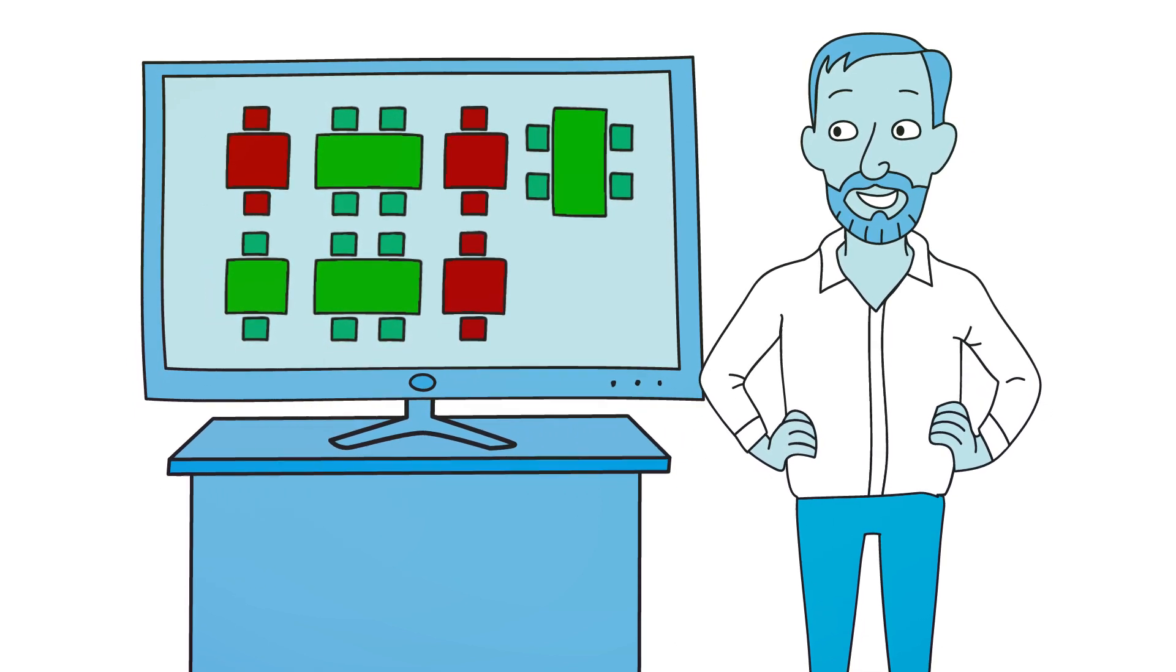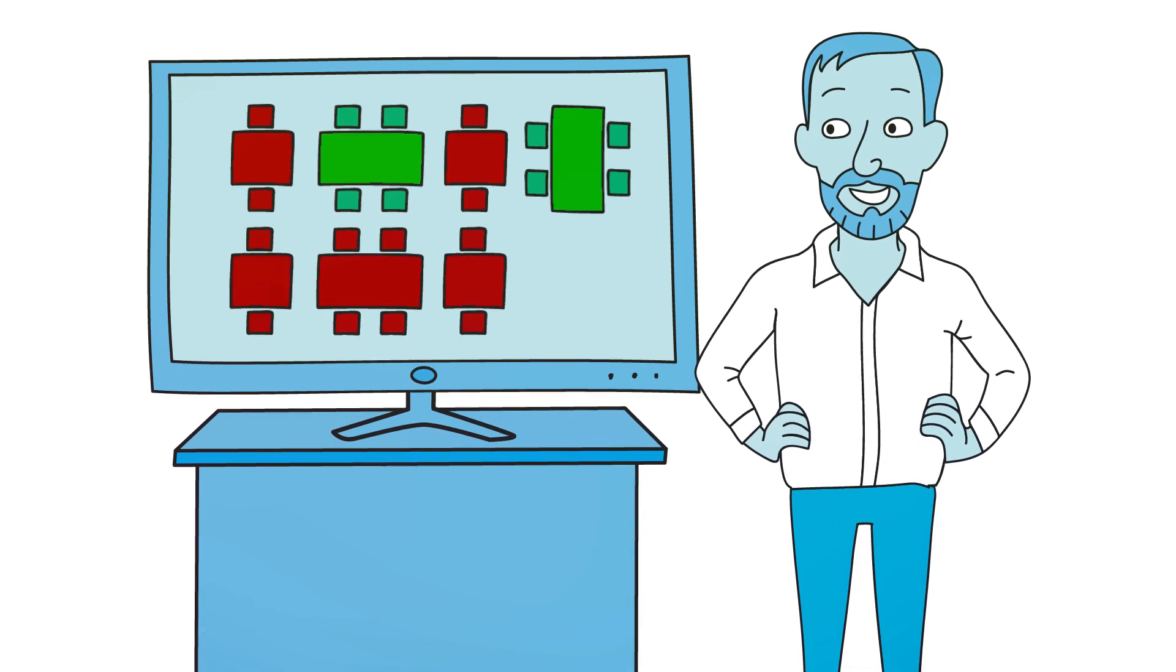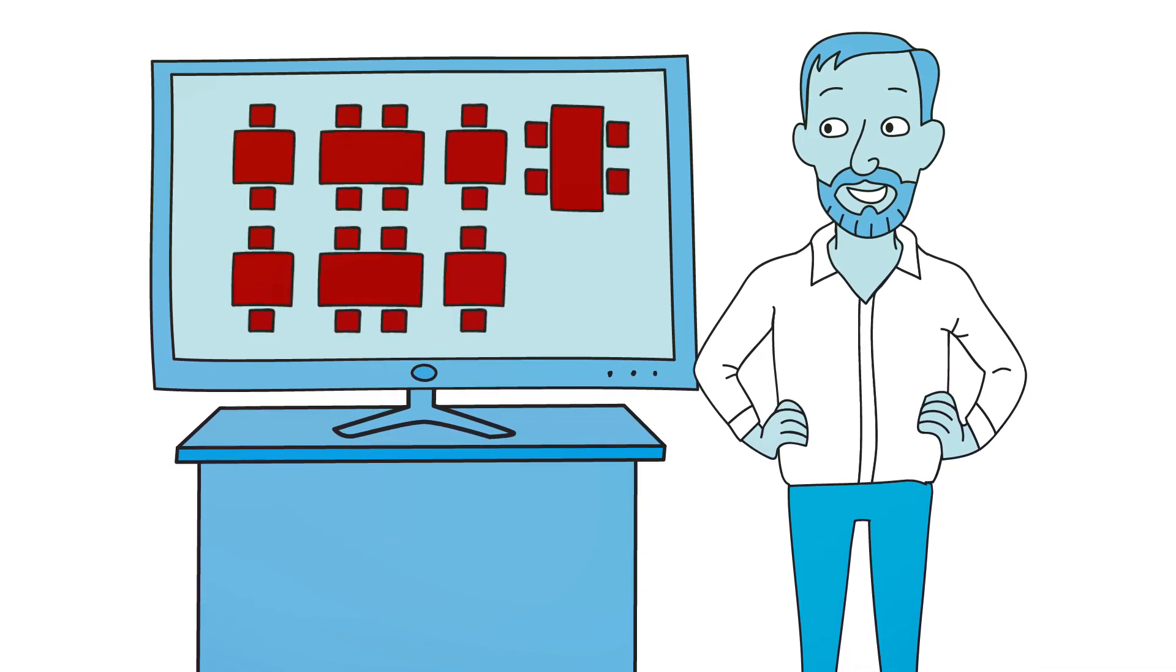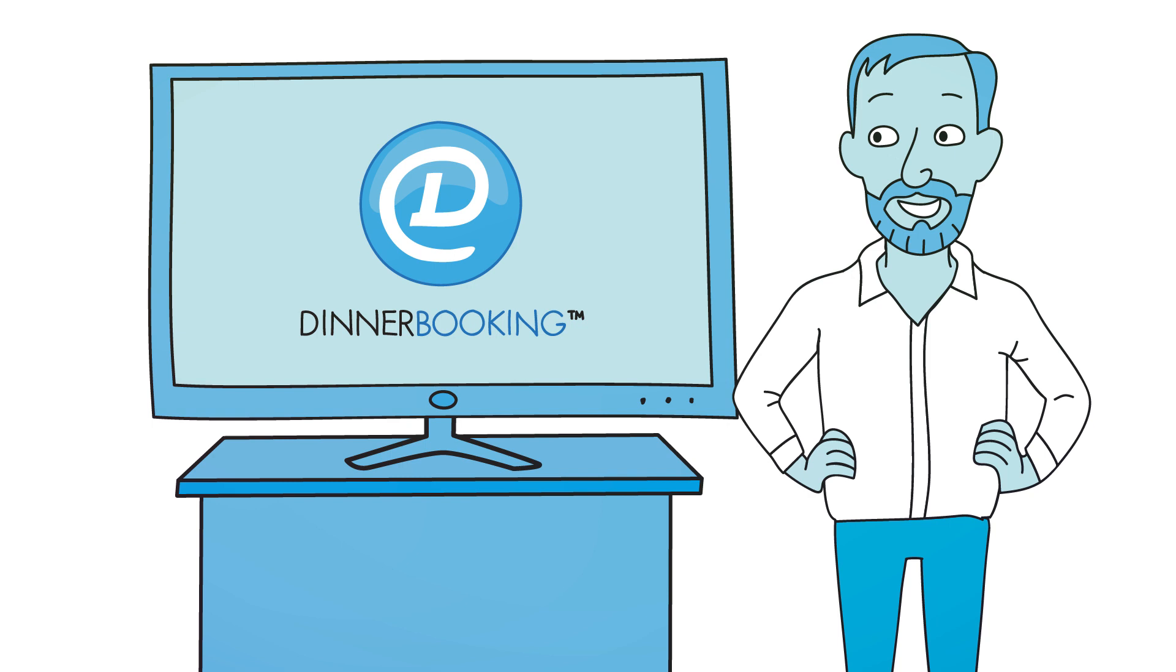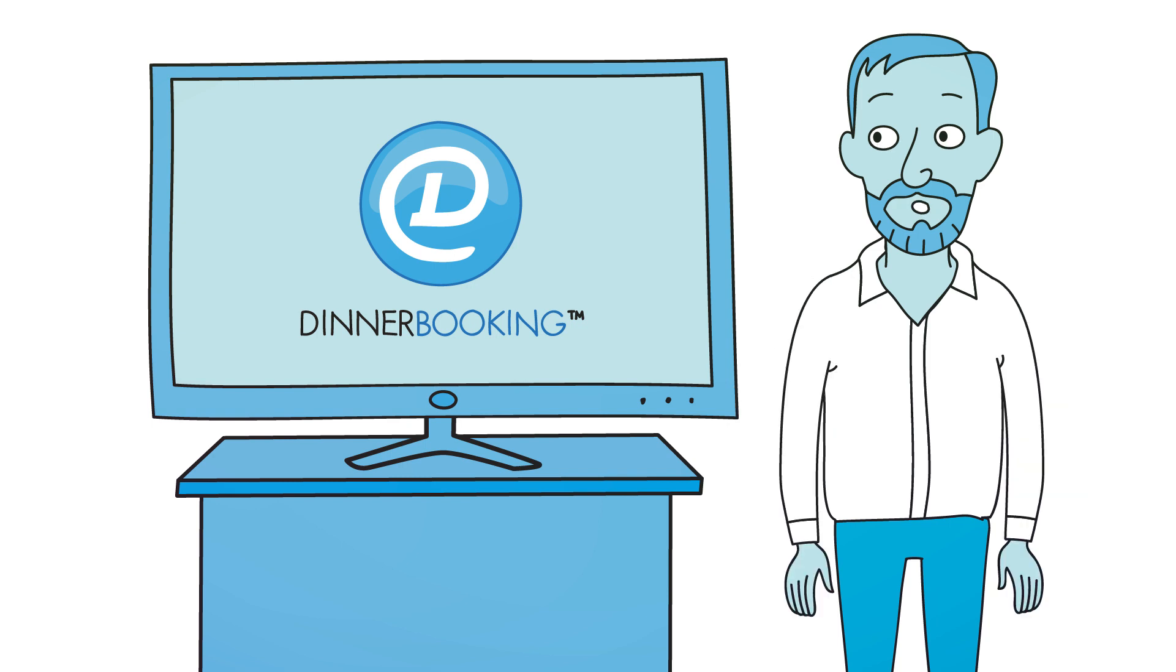What if John could optimize revenue by getting more guests in his restaurant? That's all possible now that John has DinnerBooking. But he can also do a lot more than that.